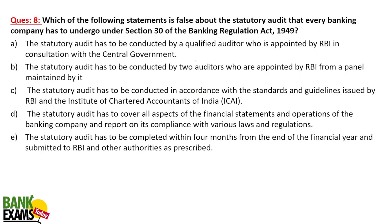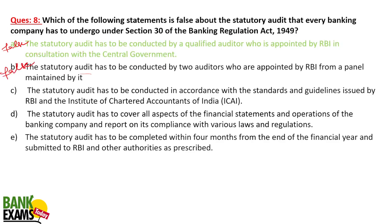Question 8: Which of the following statements is FALSE about the statutory audit every bank must undergo under section 30 of the Banking Regulation Act? Option A states the audit must be conducted by a qualified auditor appointed by RBI in consultation with the central government — this is false. Option B states the audit must be conducted by two auditors — this is also false. Options C, D, and E are true: the audit must follow ICAI guidelines, cover all aspects of financial statements and operations, and be completed within four months of the financial year end and submitted to RBI. Both A and B are false, though only A is marked here.